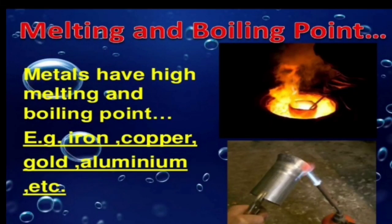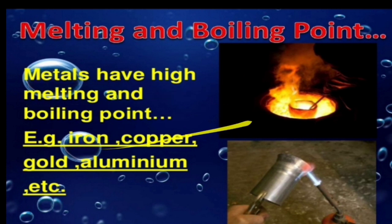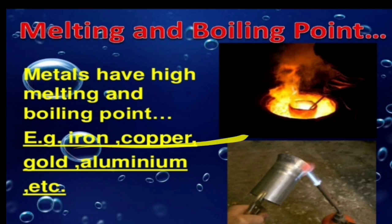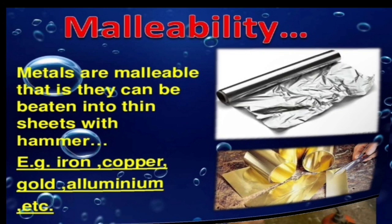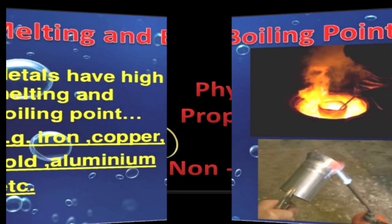Next, melting and boiling point. Metals have high melting and boiling points. Examples: iron, copper, gold, aluminium, etc. Due to the reason that they are in the form of solids, their particles are tightly packed. In order to heat these materials, very high temperature is required. So all metals show high melting and boiling points.